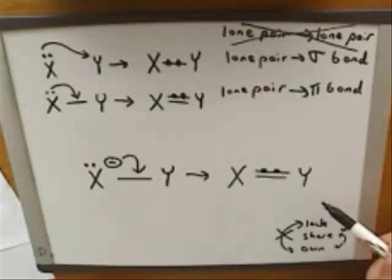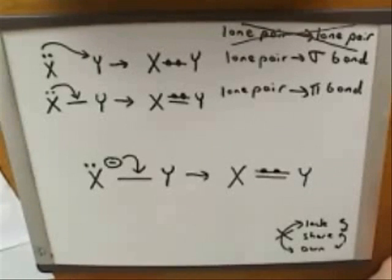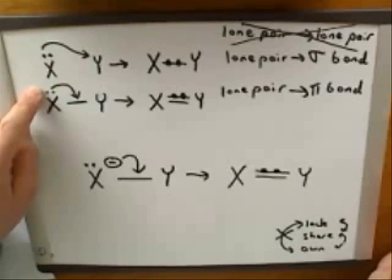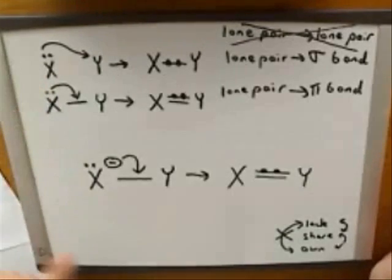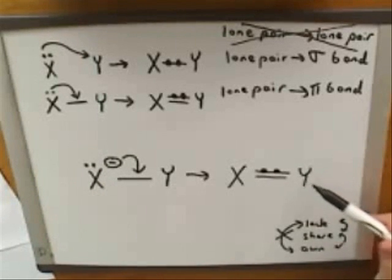So really this is just another example of what we just saw. It's just another lone pair to pi bond transition. The only difference is that on a neutral atom you have to draw in the lone pair to show where the electrons are coming from. Whereas if the atom already has a negative charge, you can just put the tail of the arrow on the negative charge. And we got a pretty similar product here.